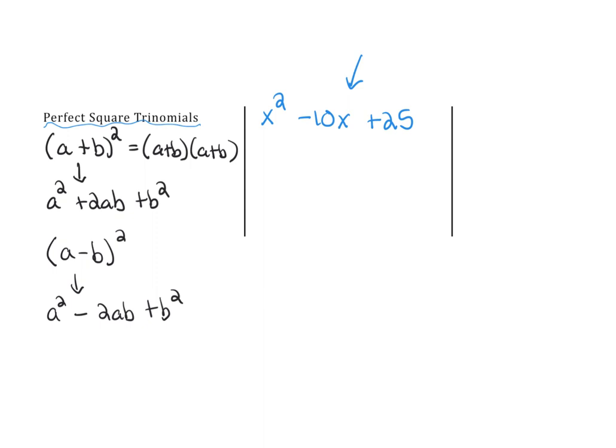But if you recognize what we're looking for here: is this a perfect square? Yes. Is this a perfect square? Yes. Let's square root them. The square root of x squared is x, the square root of 25 is 5. Now if I multiply those two together and double it do I get 10? Yes. So if I just do my square roots, if I have a minus sign there's a minus sign here, and then it's squared.